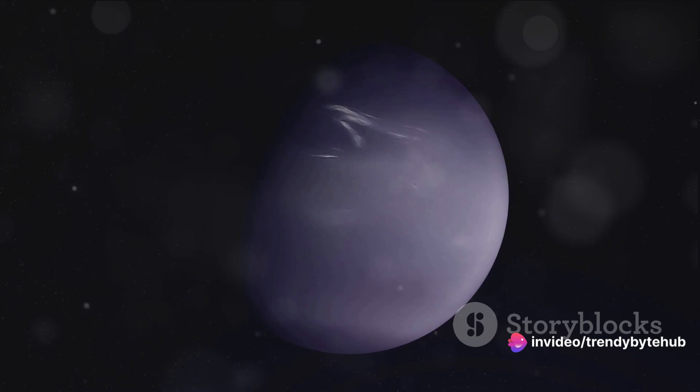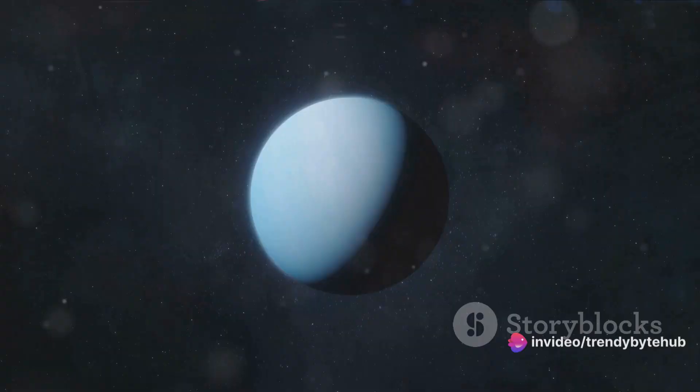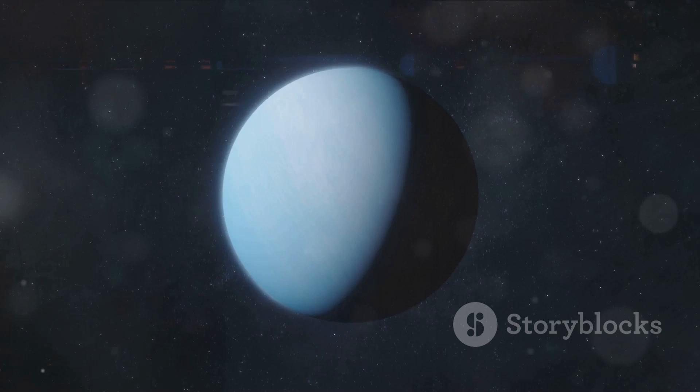The blue hue is due to the absorption of red light by methane in Neptune's atmosphere. This methane, along with traces of hydrogen and helium, gives Neptune its characteristic color, a stunning azure that stands out in the black canvas of space.